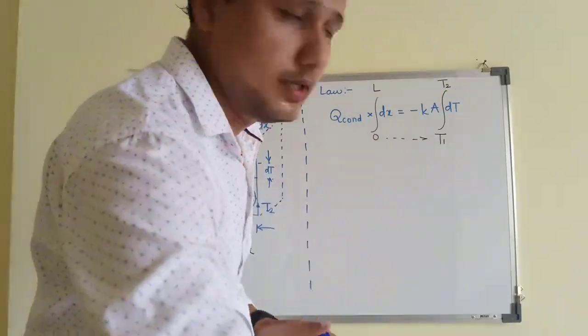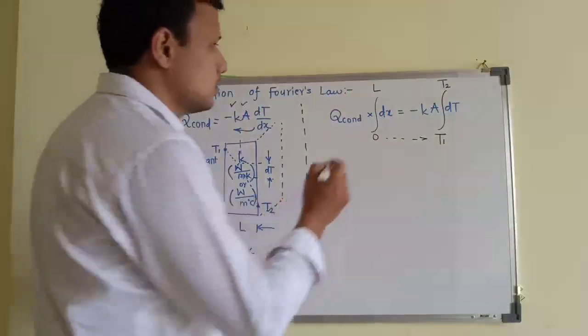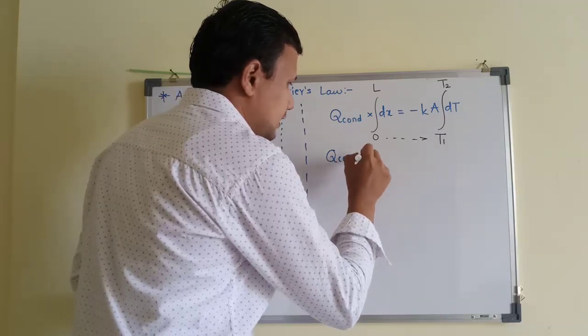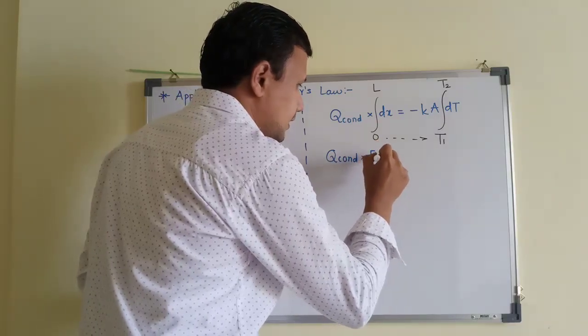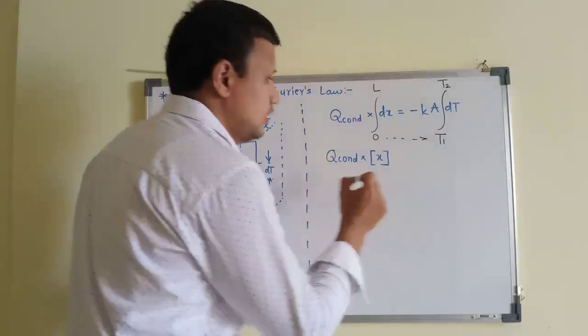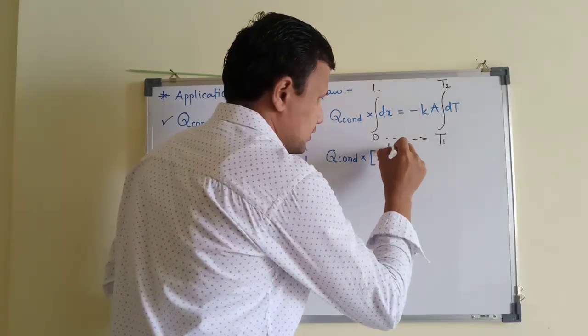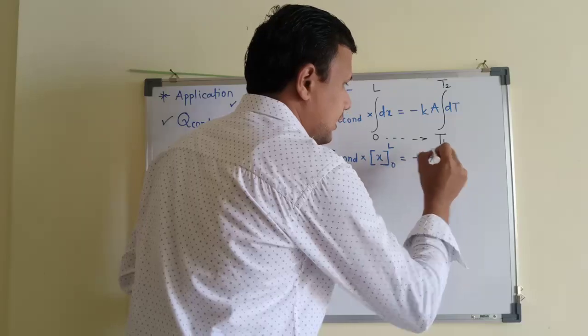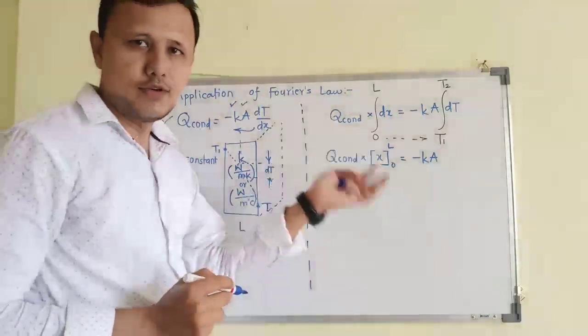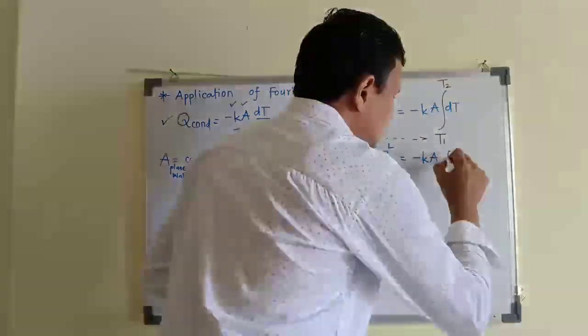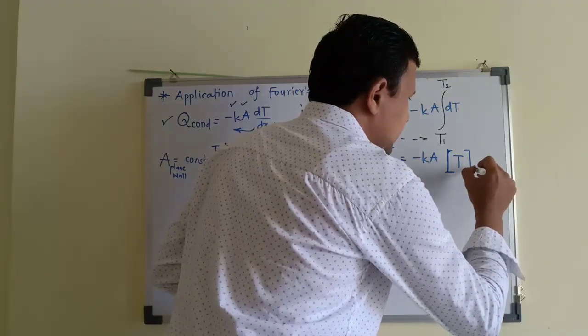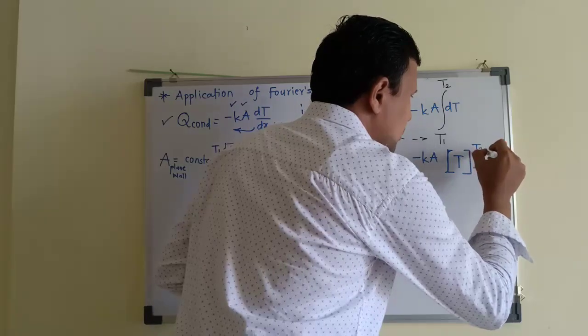Now we will perform the integration. As we know integration of dx, this integration of dx will be simply x and then we will substitute the limits of integration as well. And like I said, K and A are constant quantities, that is why they will not undergo any integration. And then this integration of dT will be T only within the limits T1 to T2.